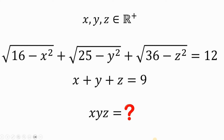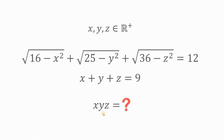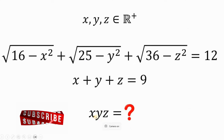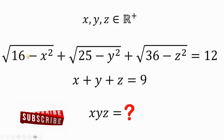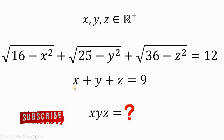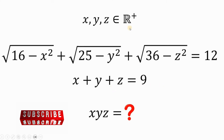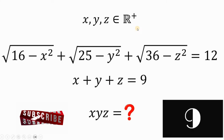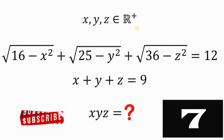Can you solve this math Olympiad problem? Here's the question. Solve for the value of the product of x, y, and z, given this equation: square root of (16 minus x²) plus square root of (25 minus y²) plus square root of (36 minus z²) equals 12, and x plus y plus z equals 9, where x, y, and z are all positive real numbers. You can pause this video if you want to give this problem a try.